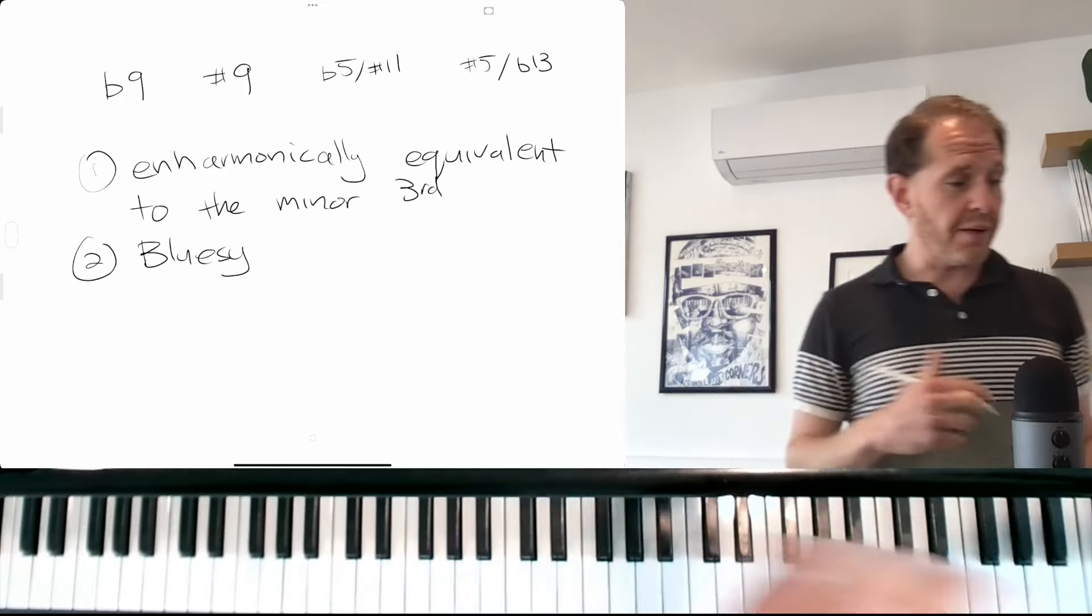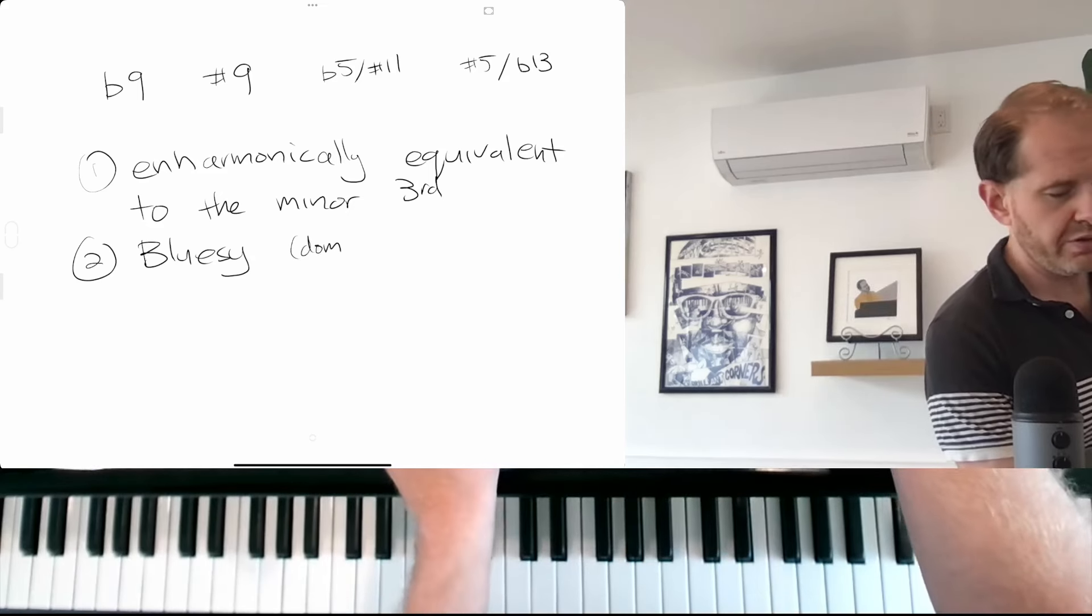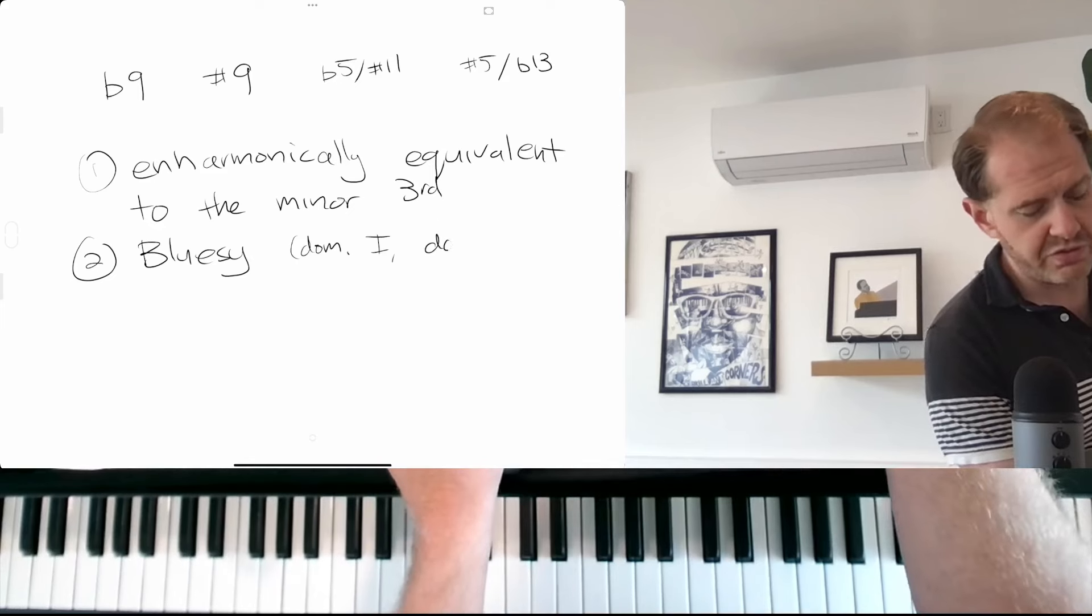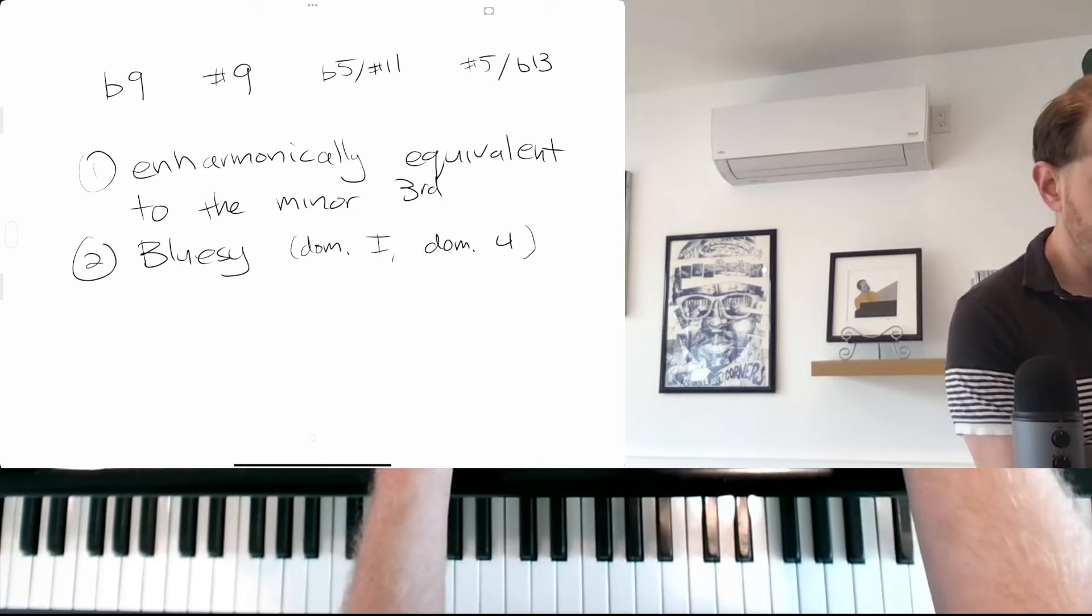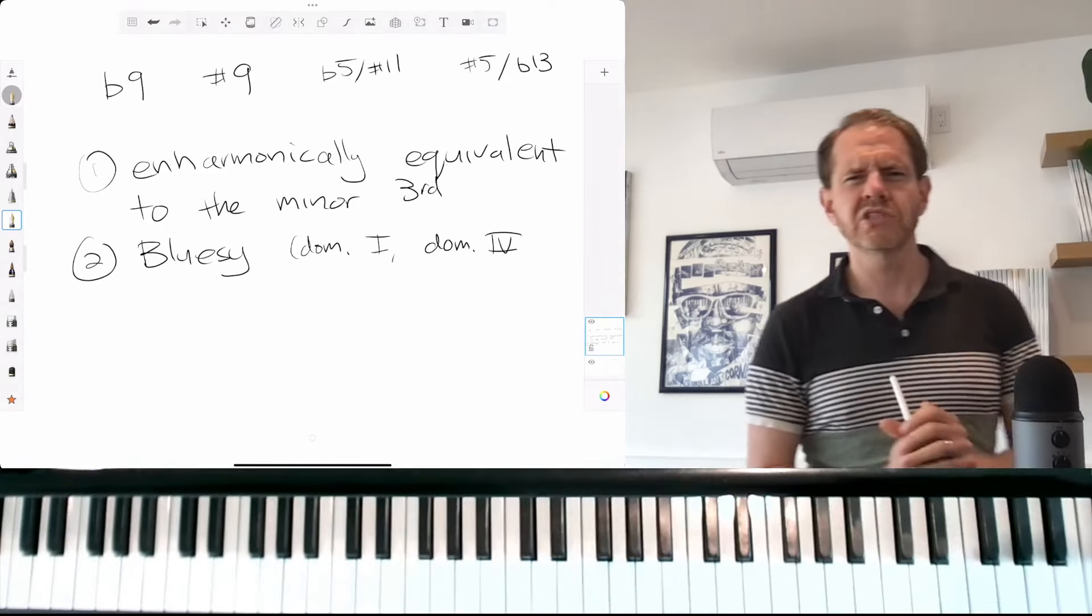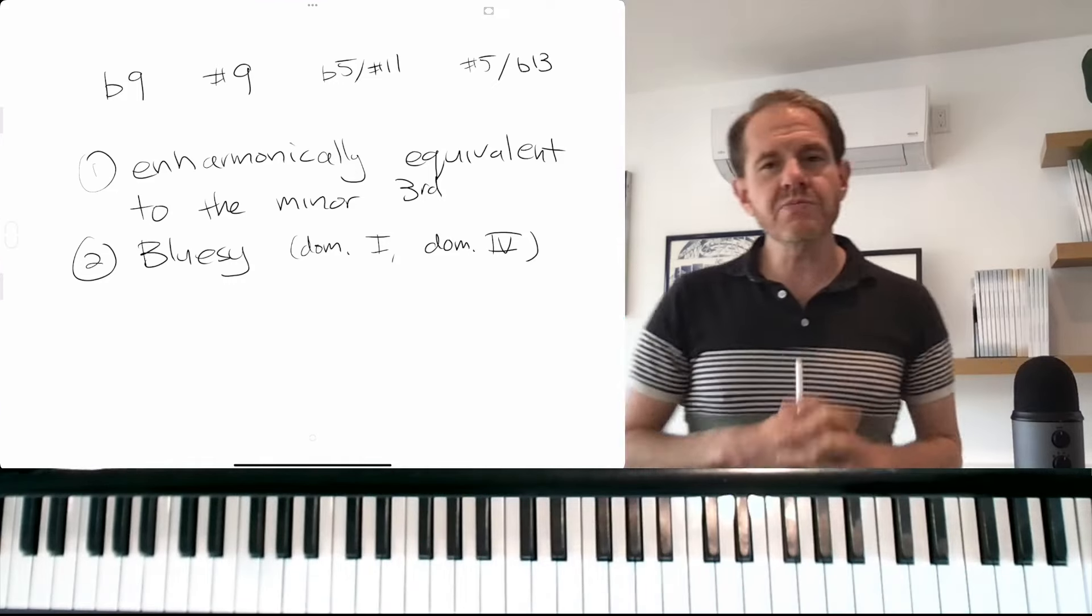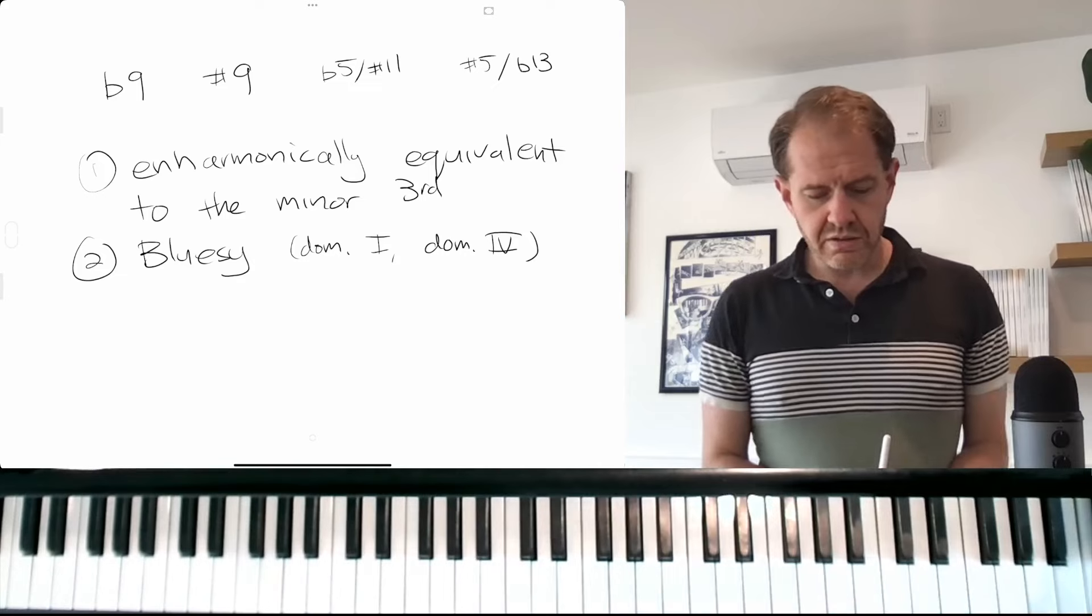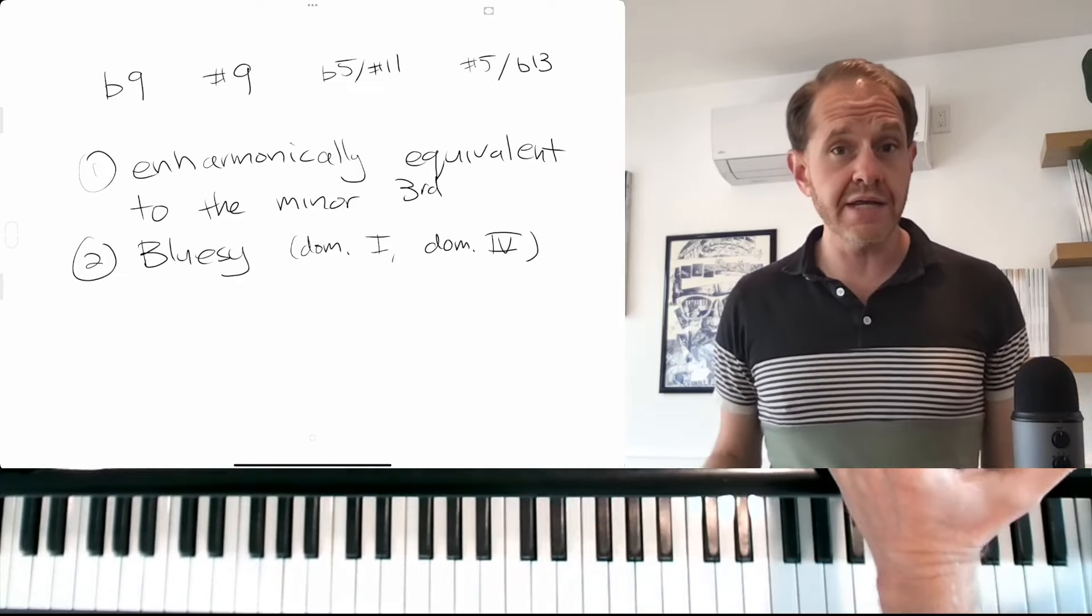And so if we have a dominant one chord like in a blues context, or a dominant four chord, which is also often used in the blues - I made one a Roman numeral and one a regular numeral. What do you call a regular numeral? It's not Roman, it's something. Anyway, if you have these bluesy chords, dominant one, the dominant four, this is going to be a really good place to put in a sharp nine.